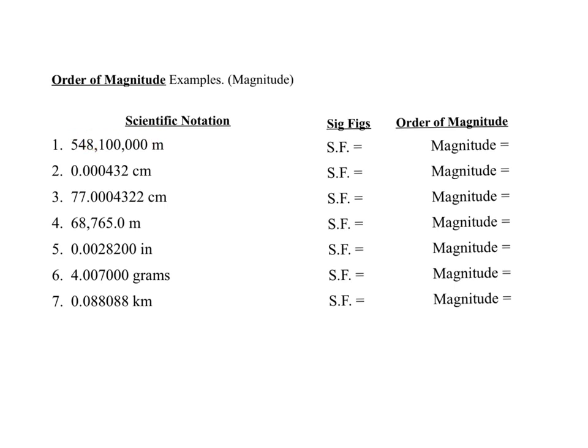The first one would be 5.481, retaining all 4 sig figs. There's 4 sig figs there. You don't count the zeros at the end of that non-decimal number. That should say 5.481 times 10 to the 8th meters. So see if you can do the other 6 problems, write them in scientific notation, and tell me how many sig figs there are.